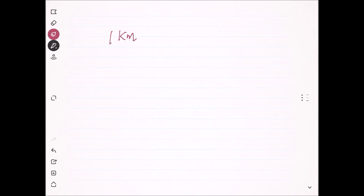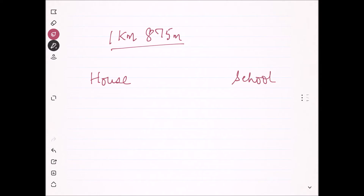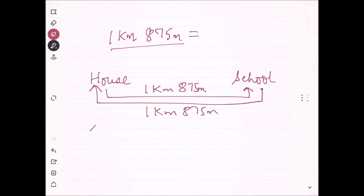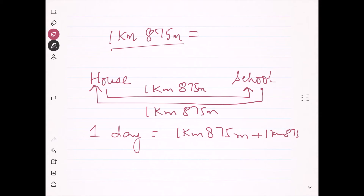One kilometer 875 meter is the distance the girl has between her house and her school. She got ready, reached school — she walked one kilometer 875 meter. We will convert this later. At noon when school ends, she came back from school to home, so she walked that distance again — one kilometer 875 meter.